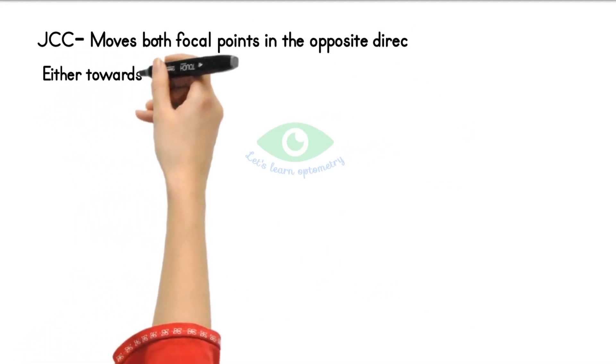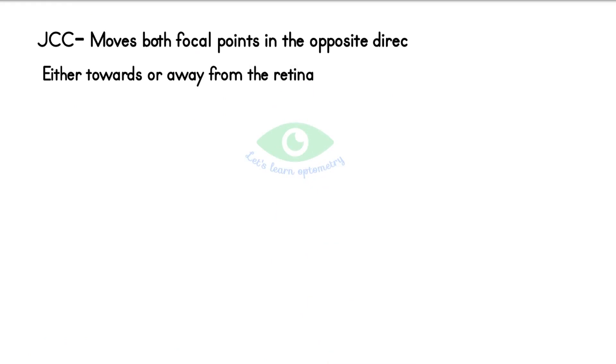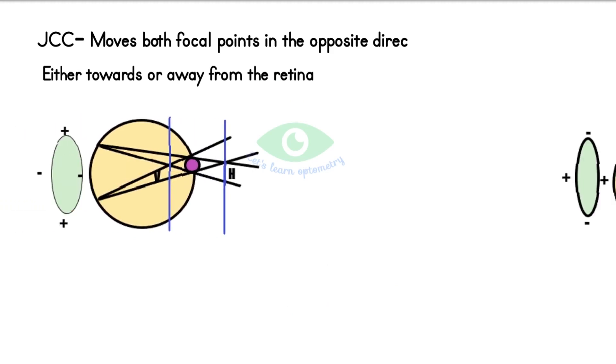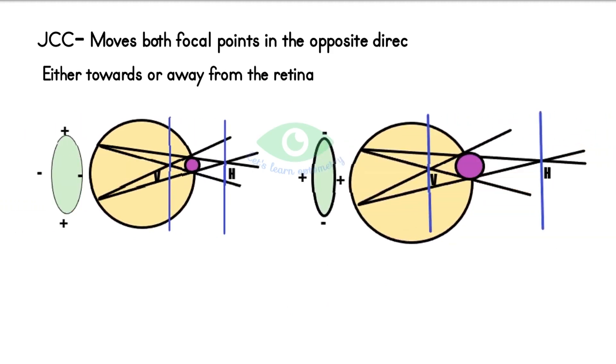So it alters Sturm's interval and either reduces or increases the size of the circle of least confusion. Note the size of Sturm's interval and the circle of least confusion here between these two pictures.